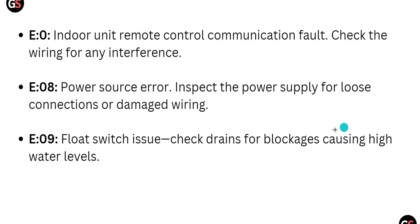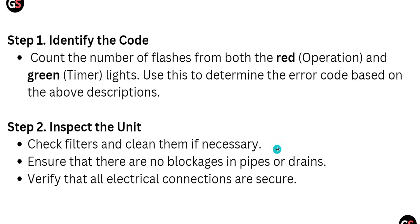Verify that the suction temperature is between minus three degrees Celsius and four degrees Celsius. Error code 07 is an indoor unit remote control communication fault — check the wiring for any interference. Error code 08 is a power source error — inspect the power supply for loose connections or damaged wiring. Error code 09 is a float switch issue — check drains for blockage causing high water levels.